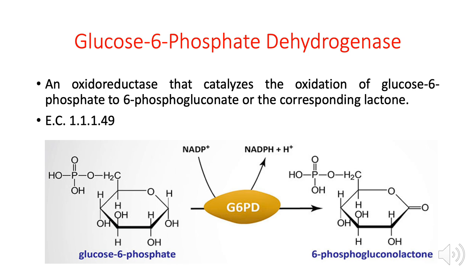Take a look at the chemical reaction catalyzed by this enzyme. The substrates are glucose 6-phosphate and NADP. At the end of the reaction, one hydrogen atom from glucose 6-phosphate is transferred to NADP, converting glucose 6-phosphate into 6-phosphogluconolactone or 6-phosphogluconate. NADP is reduced to NADPH, while glucose 6-phosphate is oxidized to become 6-phosphogluconate.